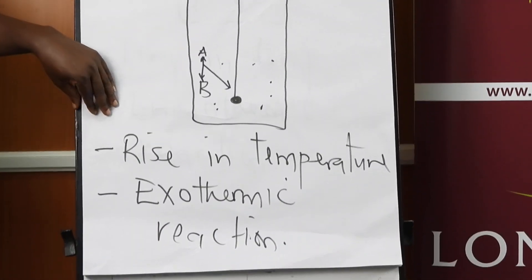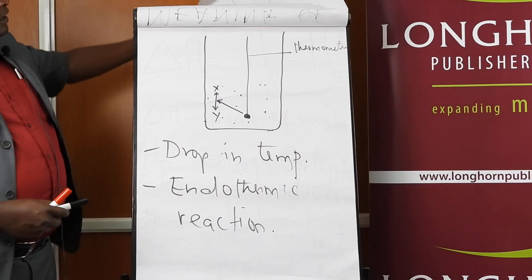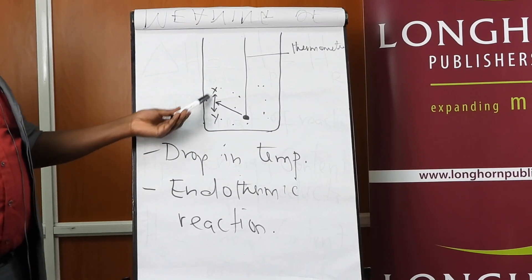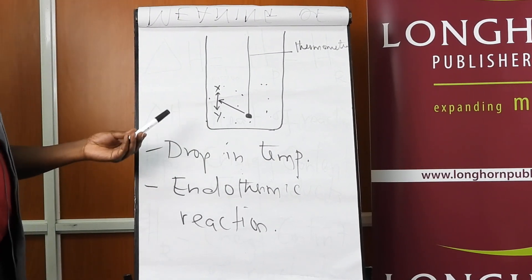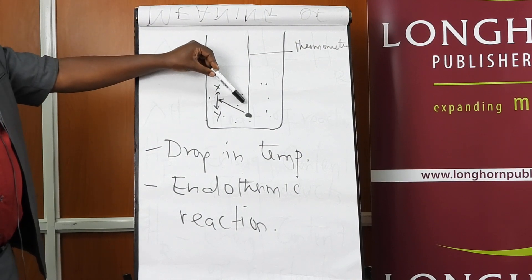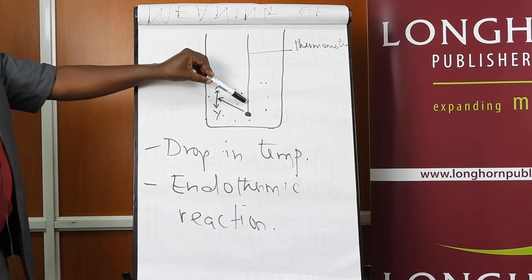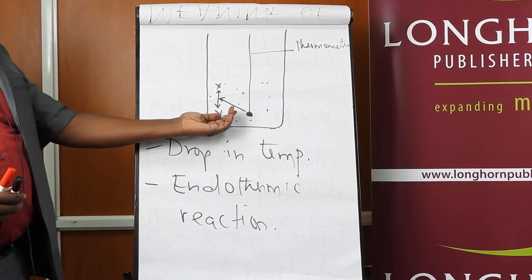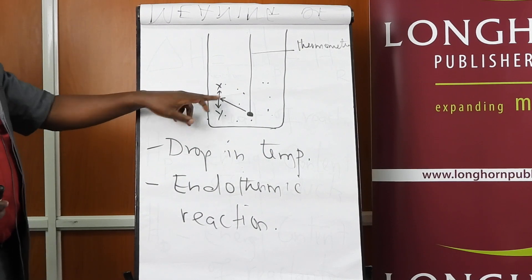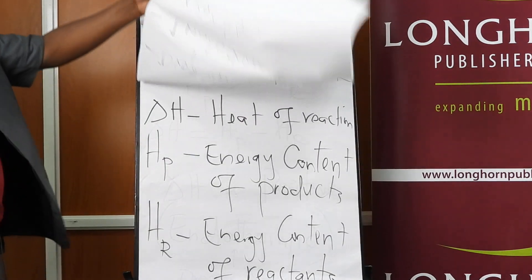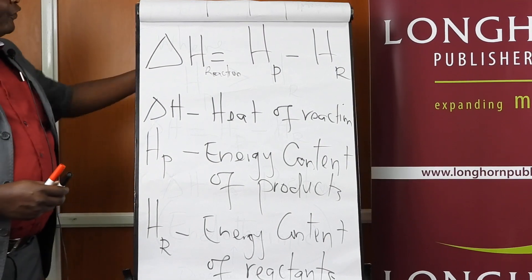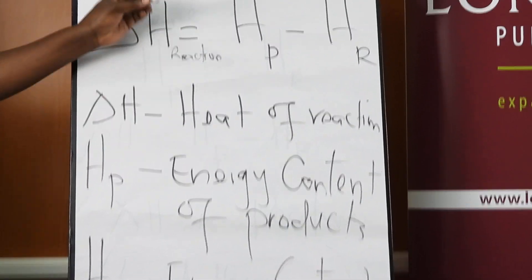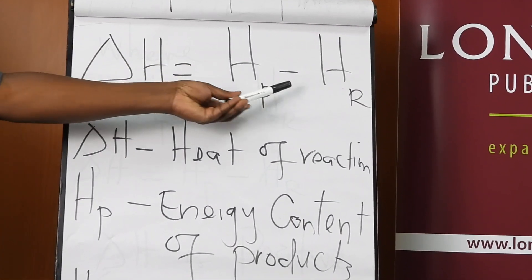If there is a rise in temperature, we say that reaction is exothermic. On the other hand, if reactants X and Y are reacting and energy is being absorbed from the environment, the temperature of that environment will drop, meaning this will be an endothermic reaction, because energy will have been lost from the environment to the system. For any particular reaction, the energy change is given by the energy content of the products minus the energy content of the reactants.